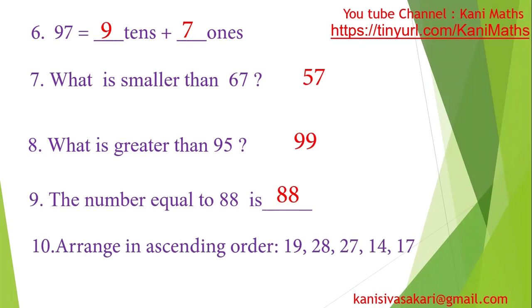So the ascending order: 14, 17, 19, 27, 28. This is the ascending order.